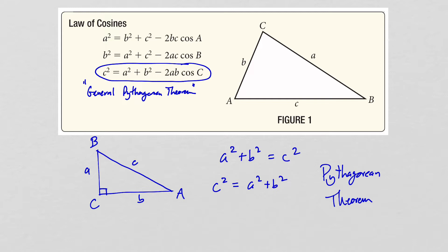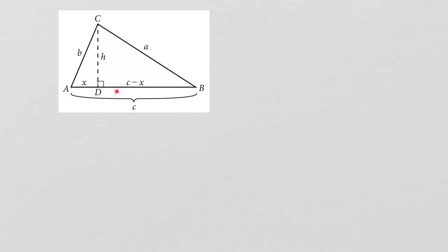Next, let's prove the law of cosines, and then we'll do some examples. To prove it, here we have triangle ABC with all sides and angles labeled — angle A, side a, angle B, side b, angle C, and side c. To prove the law of cosines, I'm going to draw the altitude from angle C down to the opposite side c. That divides side c into two parts: I'll call the first part x, and then the other part has to be c minus x.